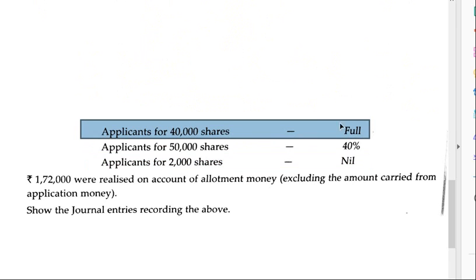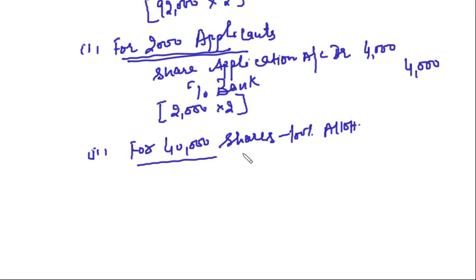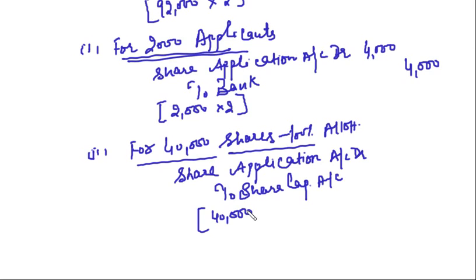Applicants for 40,000 shares were allotted full shares, so their application money is transferred entirely to share capital. The journal entry is: Share Application Account debit to Share Capital Account. The amount is 40,000 shares at rupees 2 each, so rupees 80,000 is transferred to share capital.